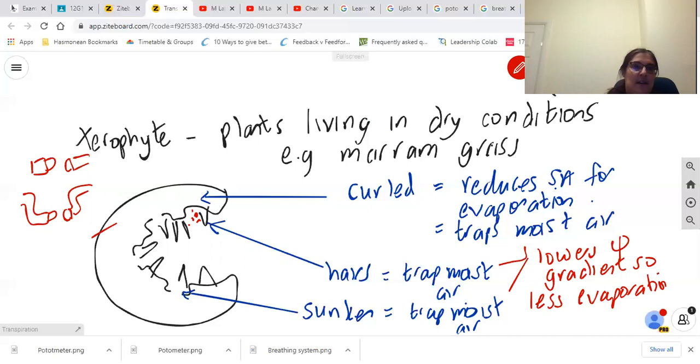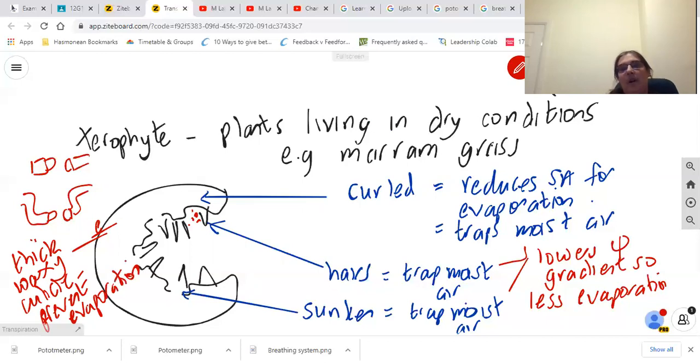The last thing to notice is that there is a thick waxy cuticle to prevent evaporation. And that's what you need to know about the xerophyte. I will cover translocation in a different video.